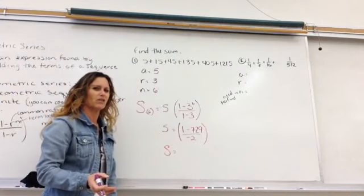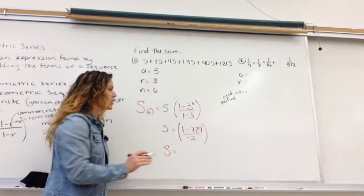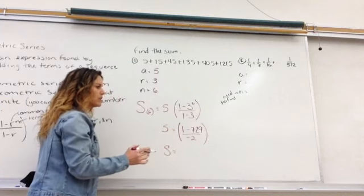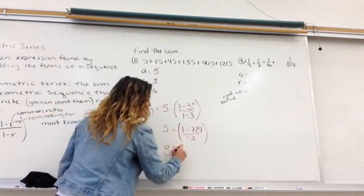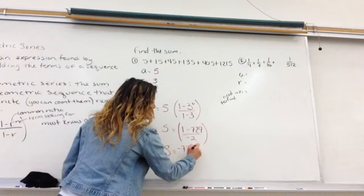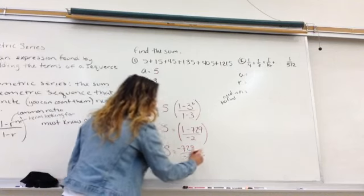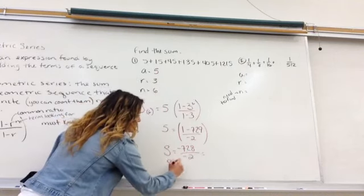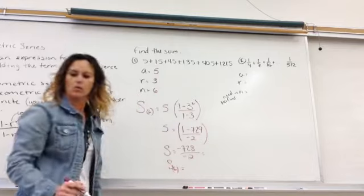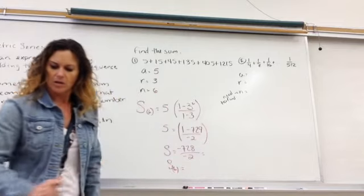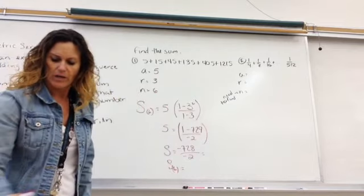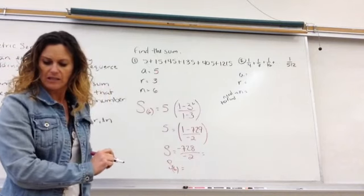Now, I know some of you are starting to see that negative on the bottom and maybe panicking a little. Well, don't, because the negative 2 on the bottom is going to cancel out with that top. So we get negative 728 on top divided by negative 2. So the sum of the first 6 terms here is going to be 364.